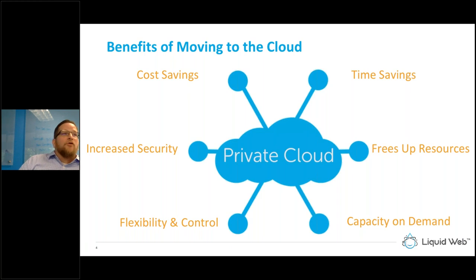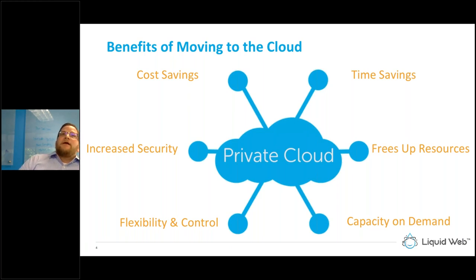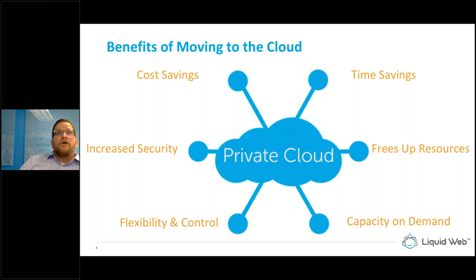Flexibility and control is incredibly important with DevOps methodologies. More and more companies are allowing developers to deploy apps, manage them, and make changes without going through central IT. Public and private cloud allow a lot of flexibility and control of individual workloads and individual VMs. Finally, increased security — the way you secure applications, servers, and workloads in the public cloud is much different than on a private cloud. With a private cloud, you can tailor individual security plans for your needs. You're not sharing any resources, so there are security benefits.